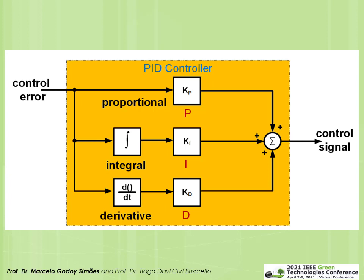Recall from module two: in a closed-loop control, you take the control error, multiply by KP (proportional), integrate and multiply by KI, take the derivative and multiply by KD, then sum all contributions. The derivative is not ideal when the error is very noisy, so most of the time we use PI controllers — but derivatives are important because they provide a kind of prediction of the future.